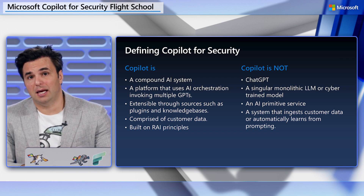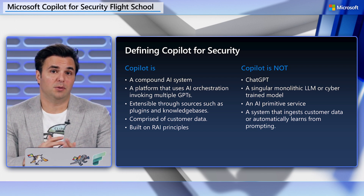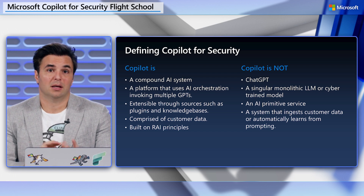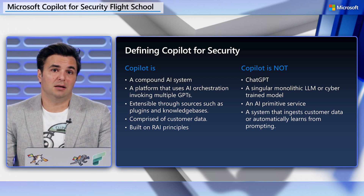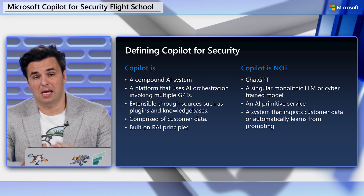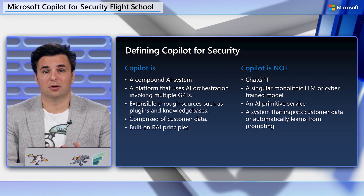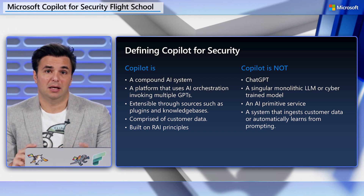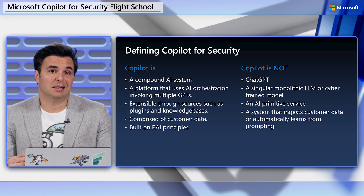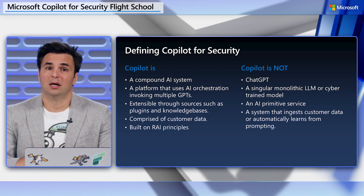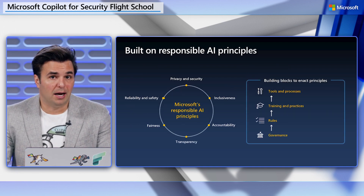Copilot for Security is a compound AI system, or AI platform, that is stateful and extensible. It uses AI orchestration to combine multiple AI components and GPTs — which are GPTs stripped of their training data. The data it reasons over belongs to the customer or to Microsoft, and any intellectual property used to produce works is protected by Microsoft's indemnity clause. It is finally a system designed from the ground up with Responsible AI principles, otherwise known as RAI.